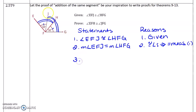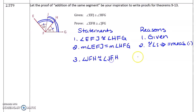Now we need to go from this angle to this one, and from this one to that one. So it looks like I need to combine EFJ with JFH, and HFG with JFH again. That again is the reflexive property — any angle is congruent to itself — so if two angles are congruent, then they have equal measure.